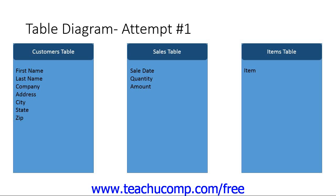For example, that is what your social security number is used for by the government. You have a unique driver's license number as well. If you were recording any of these pieces of information, you could use those as the primary key in the table. If, however, you aren't recording any type of unique information, then often you must assign your own unique values. Many companies, for example, assign customer ID numbers to uniquely identify each customer.